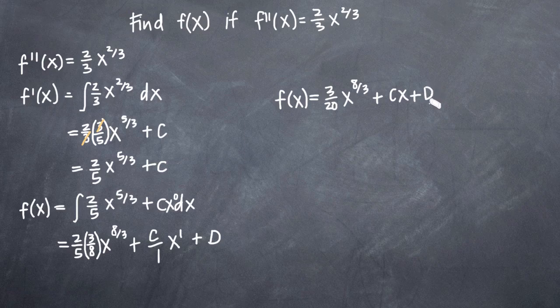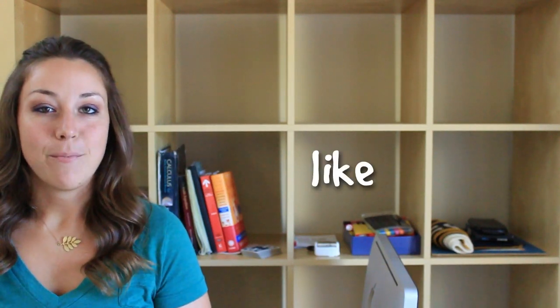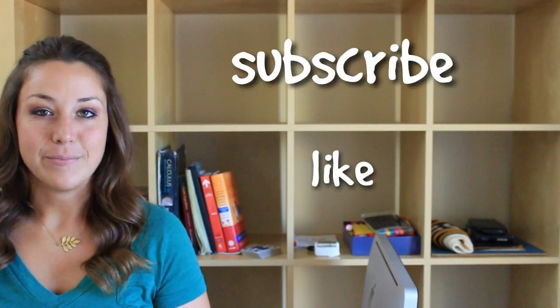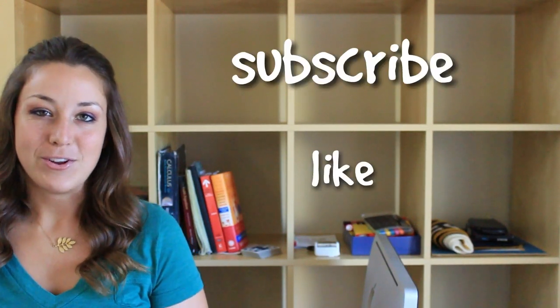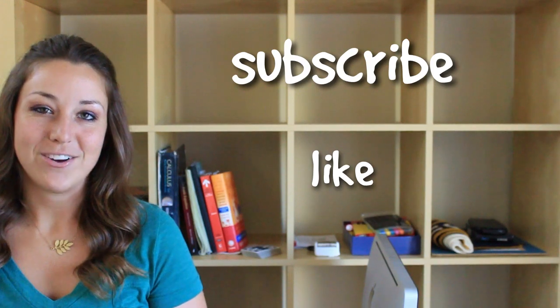And that's it. That is our original function f of x if the second derivative f double prime of x is equal to two-thirds x to the two-thirds. I hope you found that video helpful. If you did, like this video down below and subscribe to be notified of future videos.